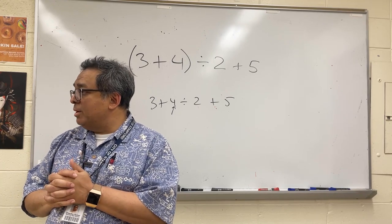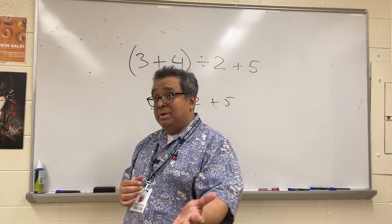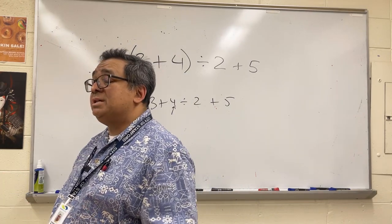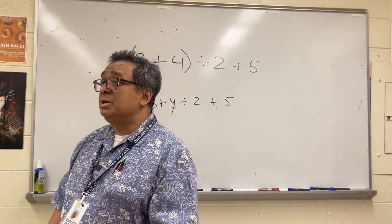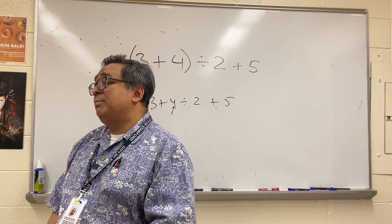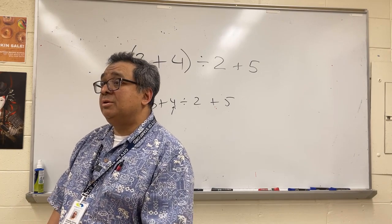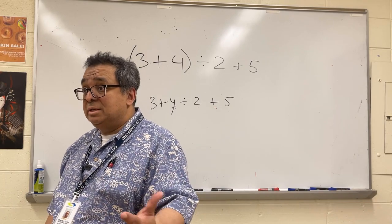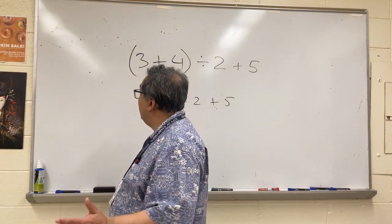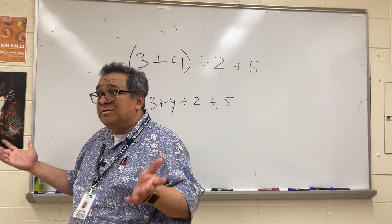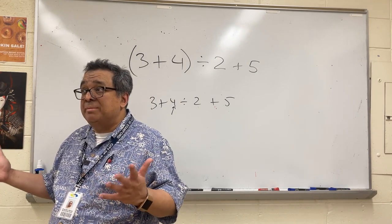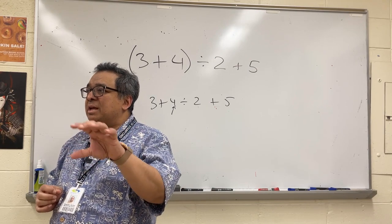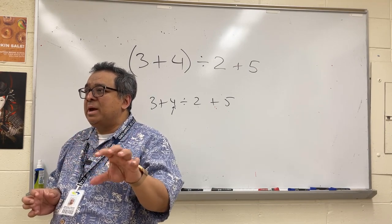It's called PEMDAS. And even PEMDAS is not really good enough for us sometimes, because we need to override those rules with parentheses. Now, human civilization has been around about 5,000 years or so, and I don't know of any civilization during that period that has written numbers any other way than with the operator in the middle and the operands on two sides.